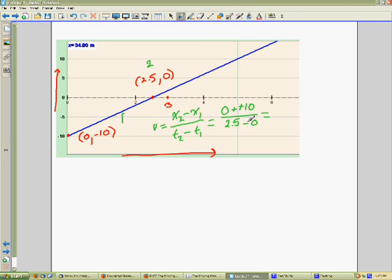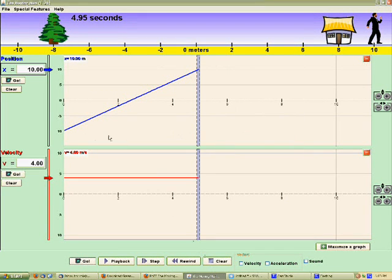So this turns positive and we end up with ten divided by 2.5. That's also equal to four meters per second. So we got four meters per second here. In the moving man, we got a four meters per second positive velocity and it corresponds with the position graph. Thanks for listening.